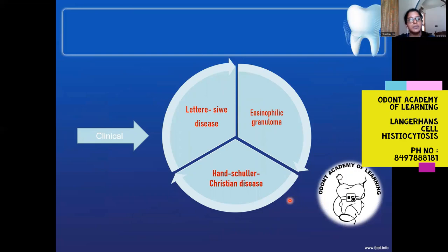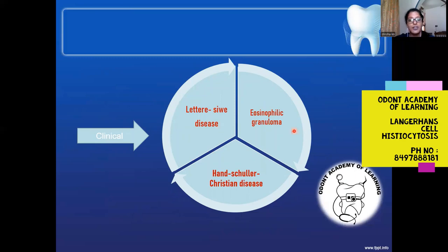The clinical appearance of this condition represents a spectrum with three different forms: the acute fulminant form known as Letterer-Siwe disease, a chronic form called eosinophilic granuloma, and an intermediate clinical form known as Hand-Schüller-Christian disease.